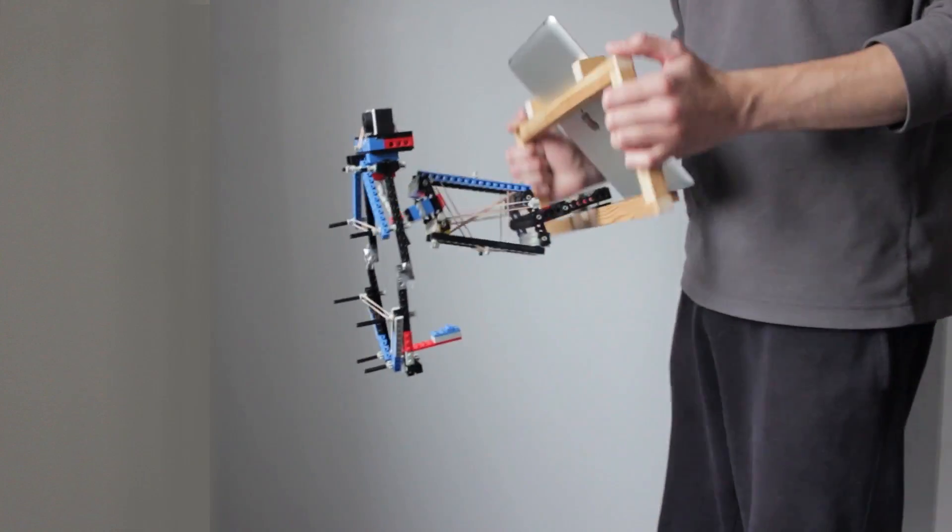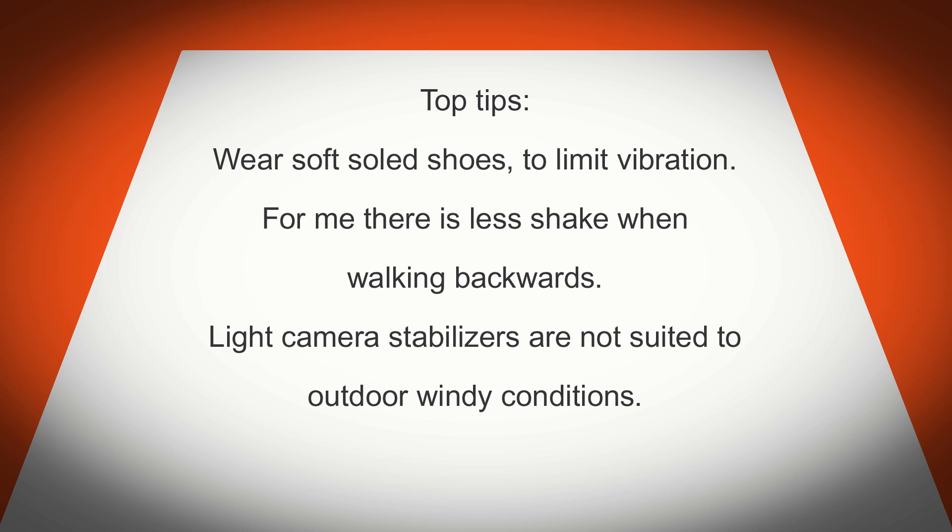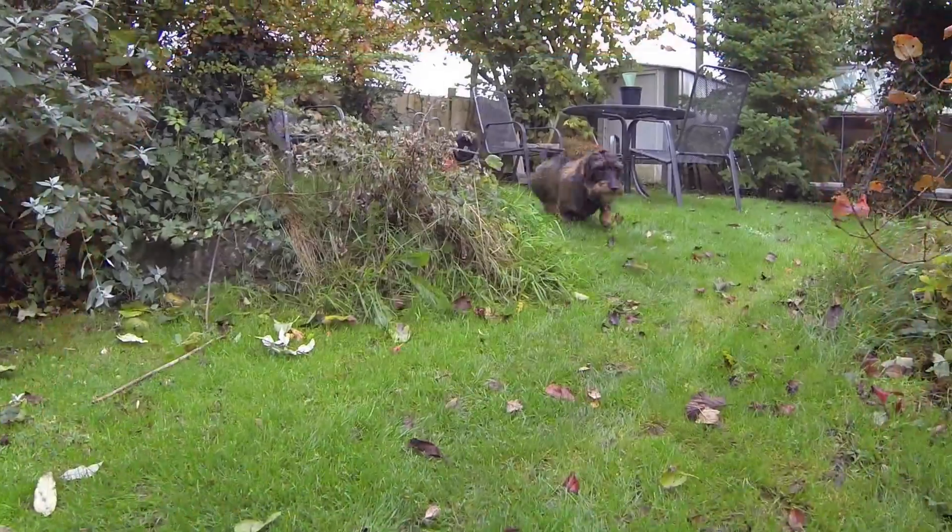A few tips I've picked up whilst experimenting are to wear soft shoes to help limit vibration. Walking backwards creates less vibration than walking forwards, and the light camera stabilizers are prone to move around too much in windy conditions.